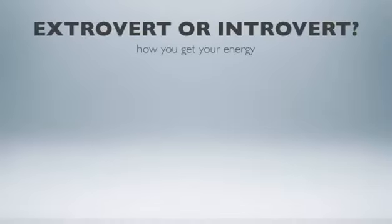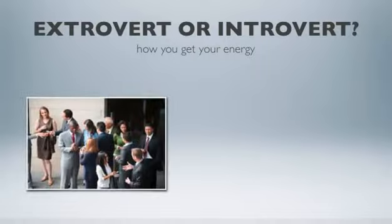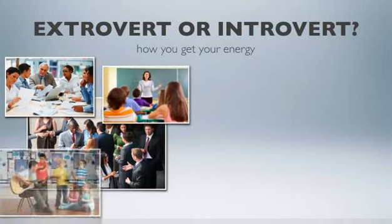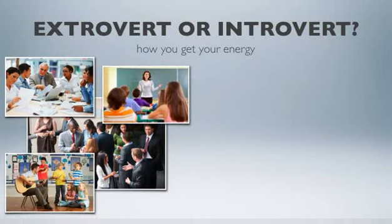The first facet, extroversion-introversion, describes how you get your energy and where you prefer to focus your attention. Extroverts prefer to focus outward on the world around them. They are energized by activities like meeting new people, talking about their ideas, speaking in front of groups, and being in active environments.